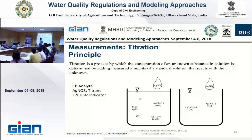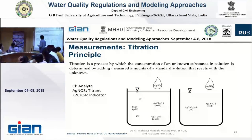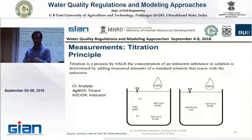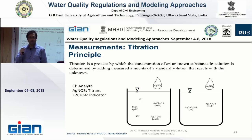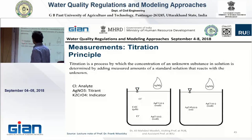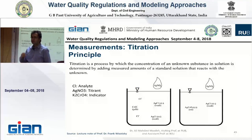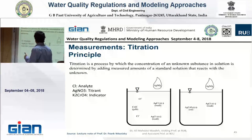The material we add to the water is titrant. For chlorine, we use AgNO₃. When we add AgNO₃ to the water, it reacts with the chlorine. It is important to add it in very small amounts each step, drop by drop. The chlorine reacts with Ag⁺ to form AgCl, which precipitates, and the water becomes white.